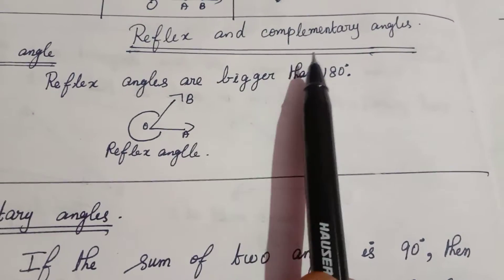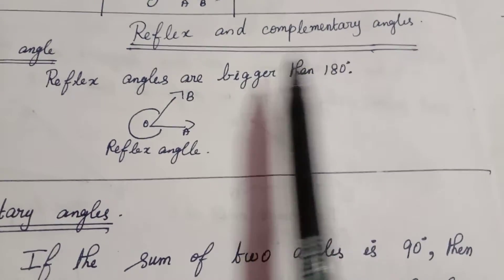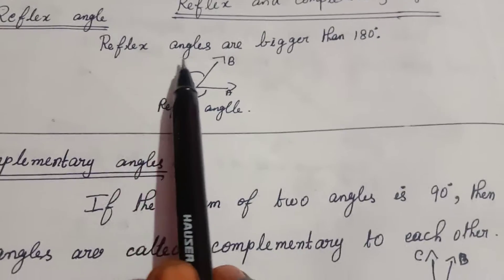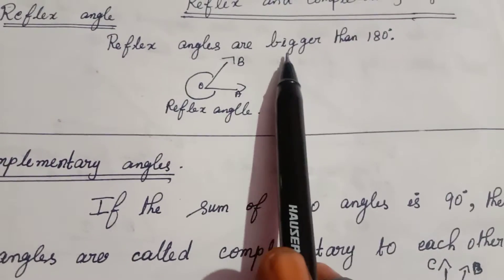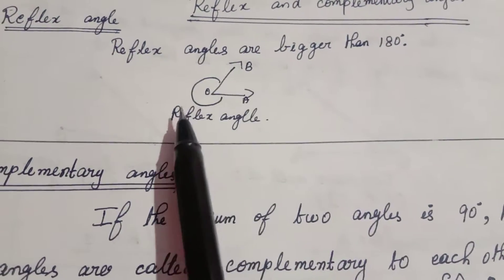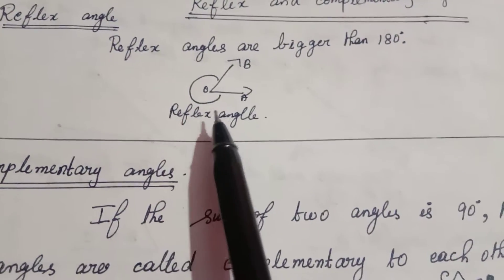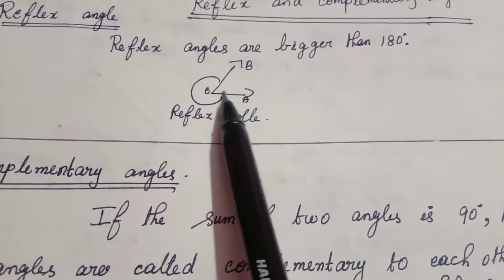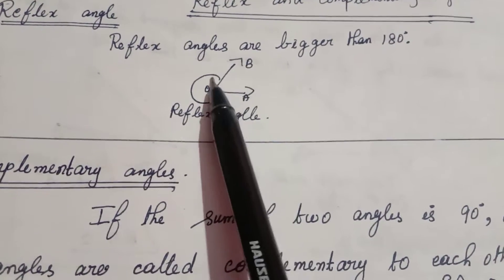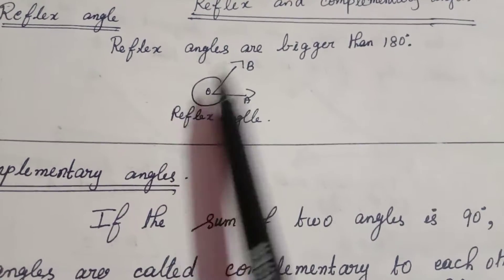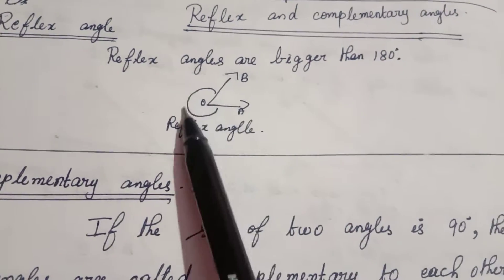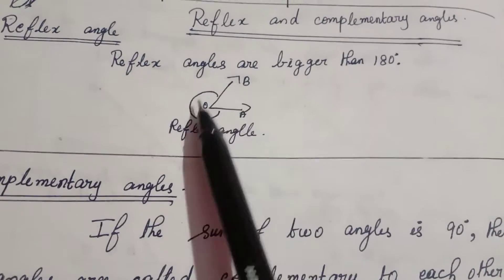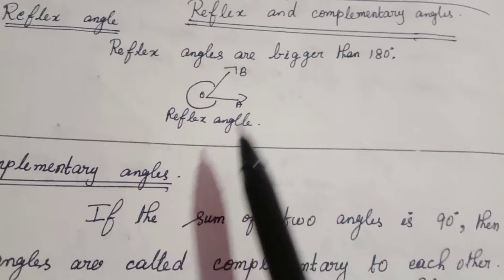We are going to see reflex angle and complementary angles. Reflex angles are bigger than 180 degrees. This is angle AOB, also called BOA. This is reflex angle AOB, or BOA.